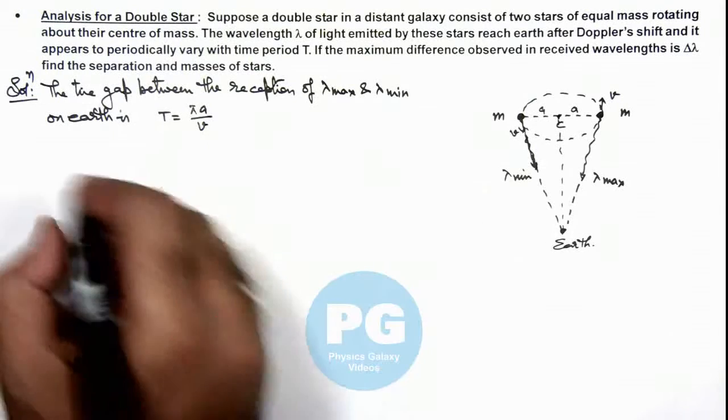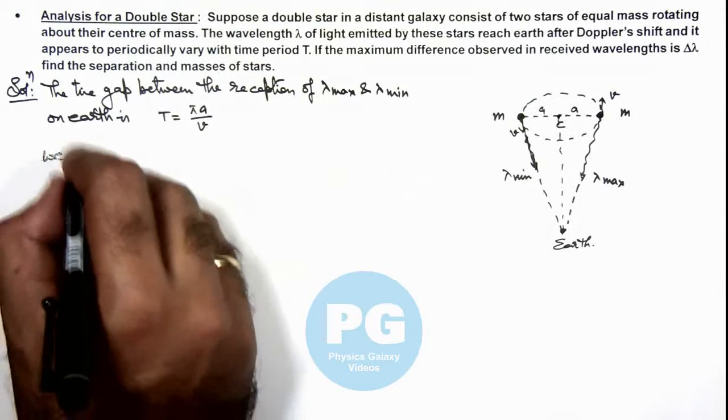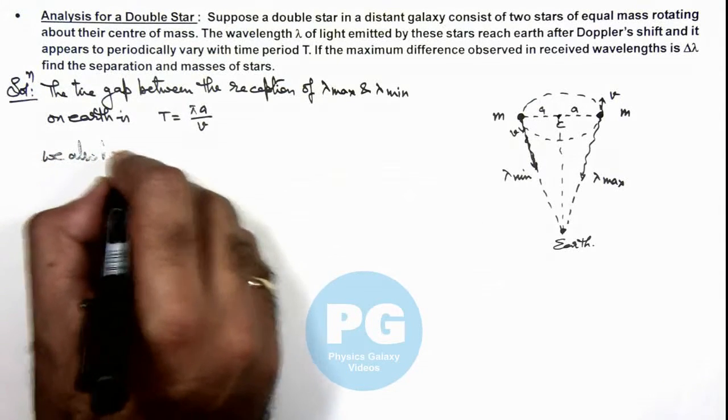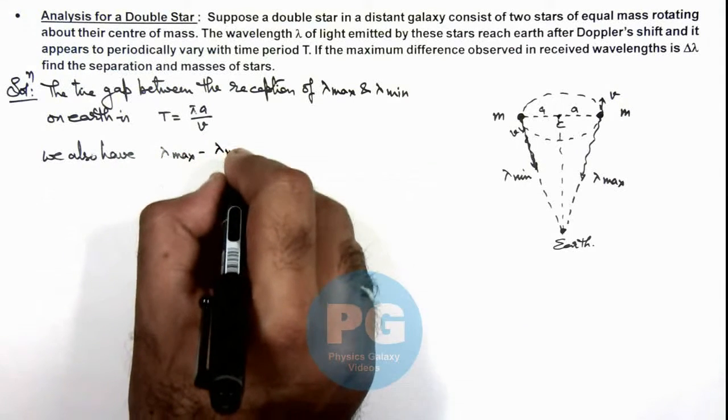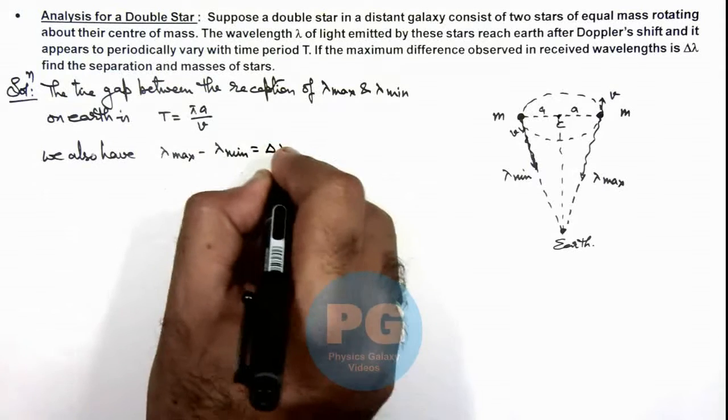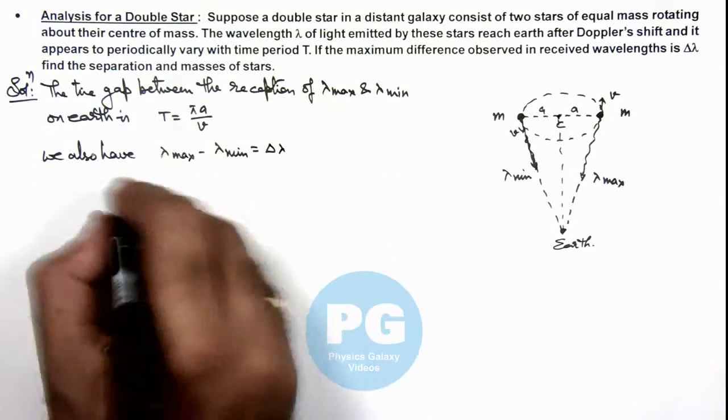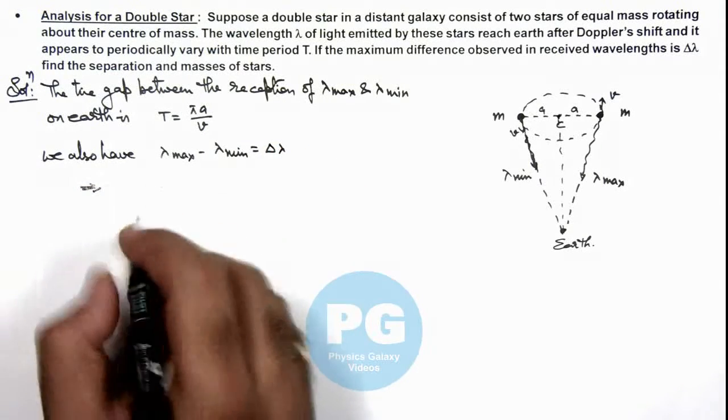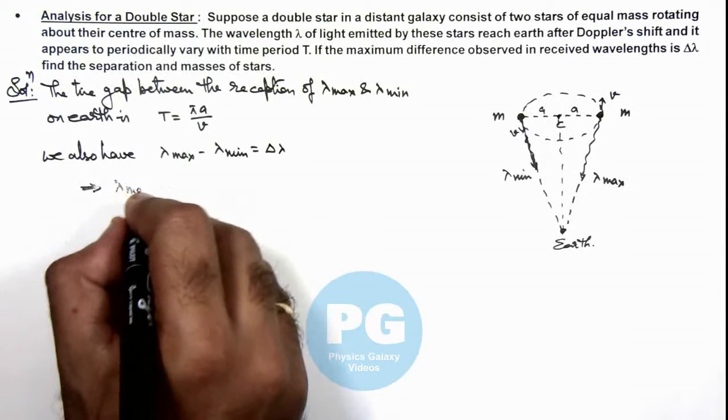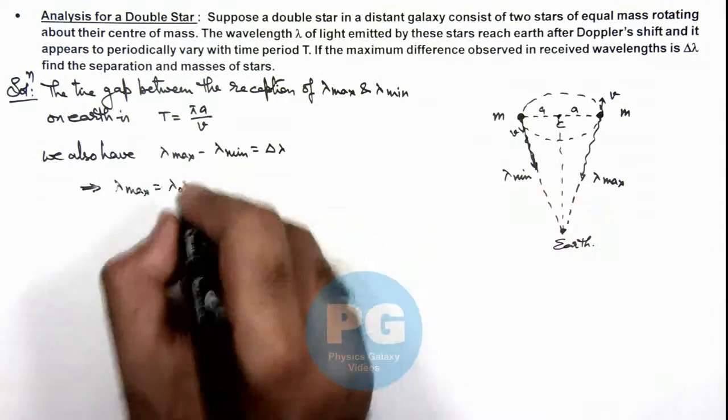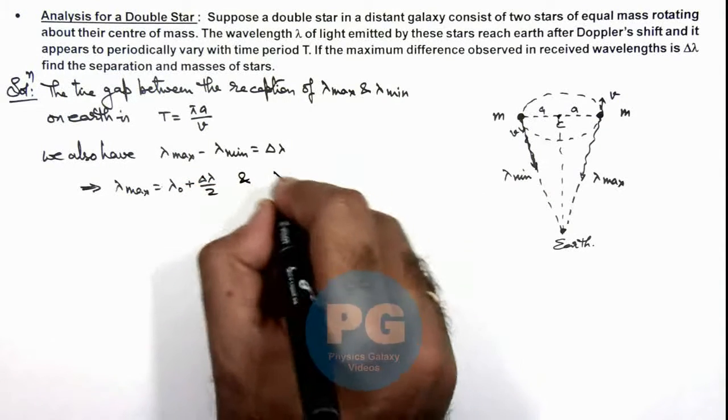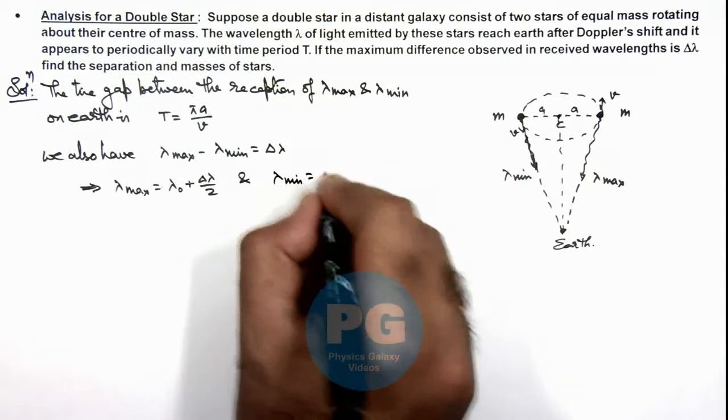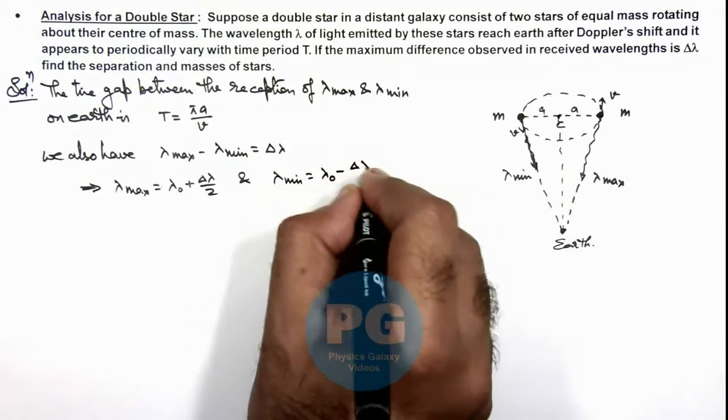In this situation we also have λ_max minus λ_min is equal to Δλ, which implies the value of λ_max is λ₀, which is a mean wavelength, plus Δλ/2. And λ_min can be written as λ₀ minus Δλ/2.